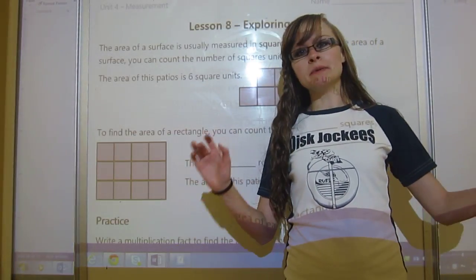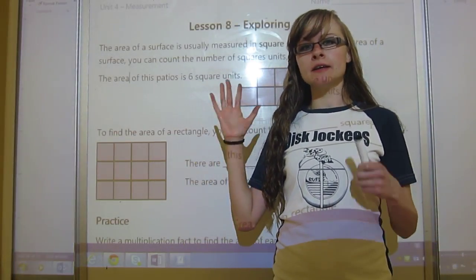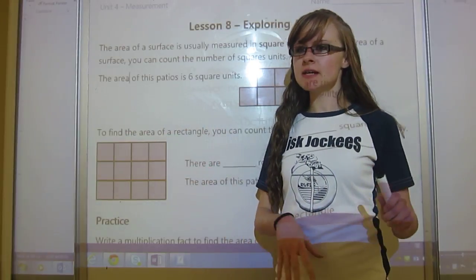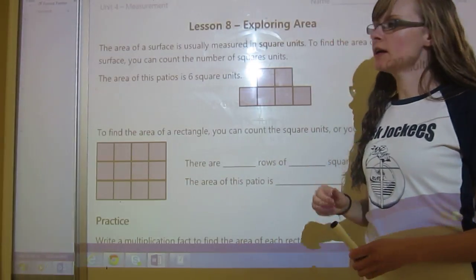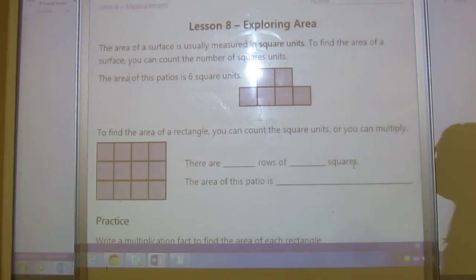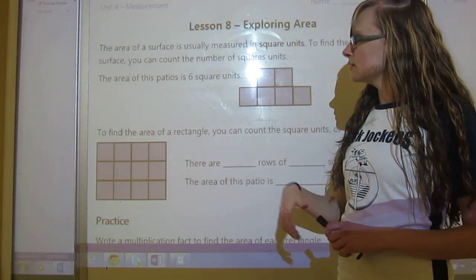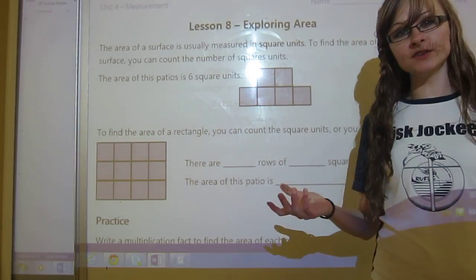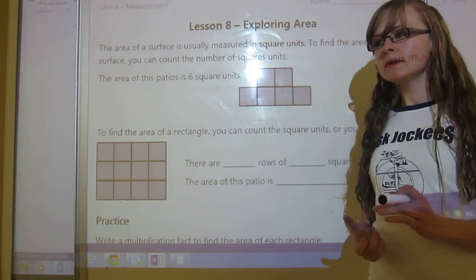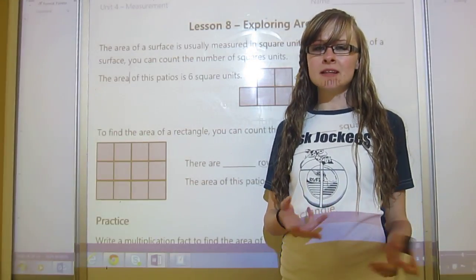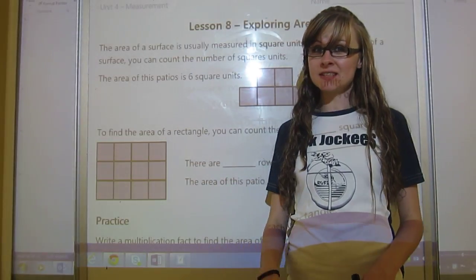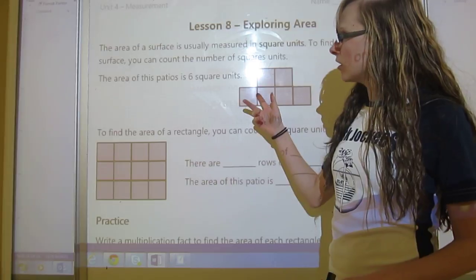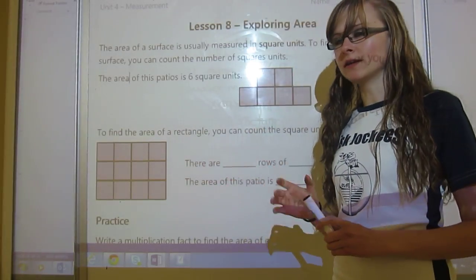We're going to look at the basics of area, and area is basically the amount of space on a flat object. The area of a surface is usually measured in square units. To find the area of a surface, you can count the number of square units. Those units could be centimeters, millimeters, meters, or technically kilometers. We're not going to worry about that for this lesson. We're just going to call these square units for now.